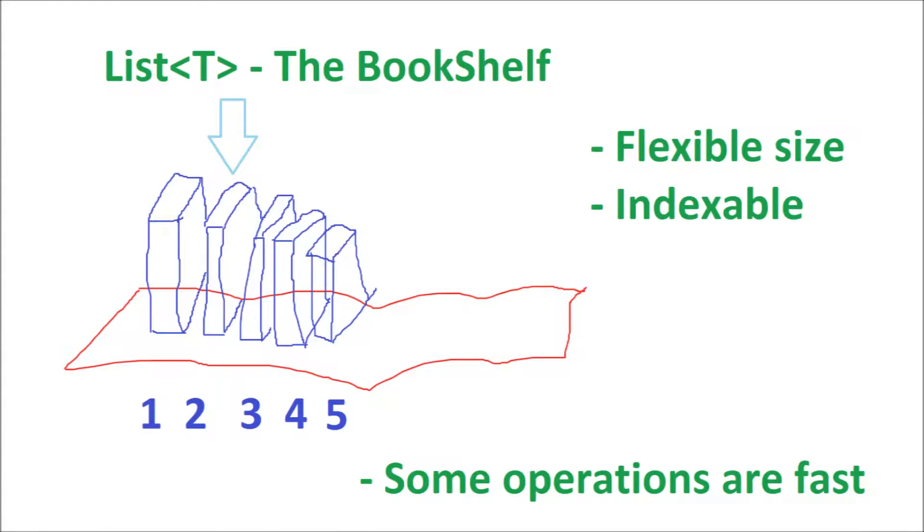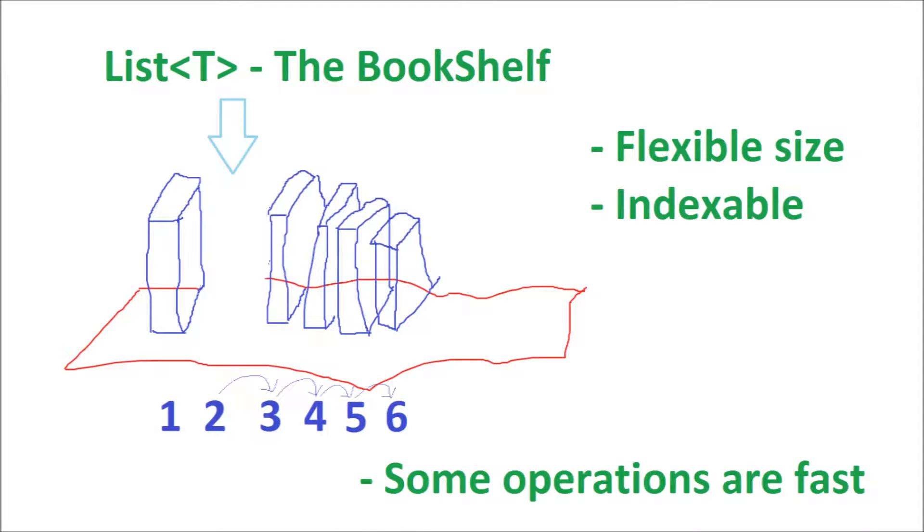There is a cost associated with adding a new book in the middle of the shelf. You have to shuffle everything else down a little. Searching can also be expensive as you have to check each item in the list.